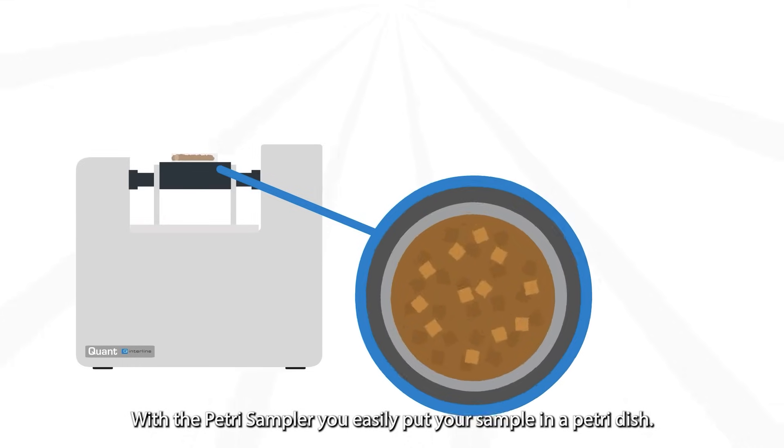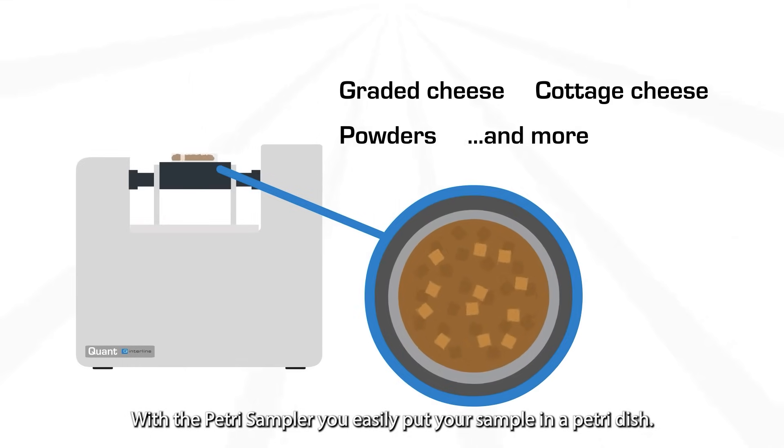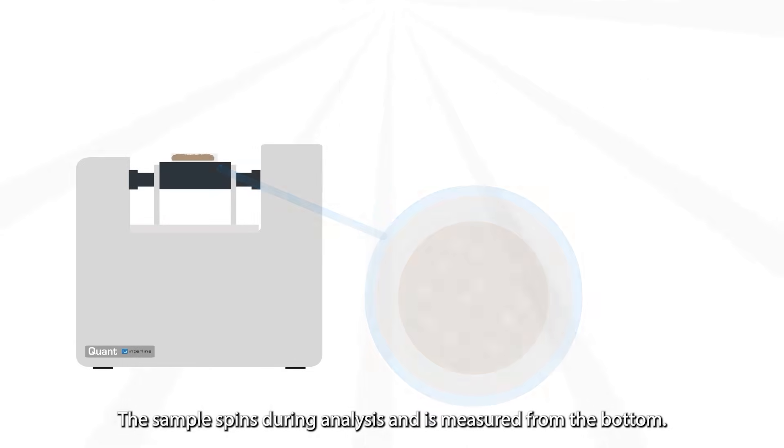With the Petri Sampler, you easily put your sample in a Petri dish. The sample spins during analysis and is measured from the bottom.